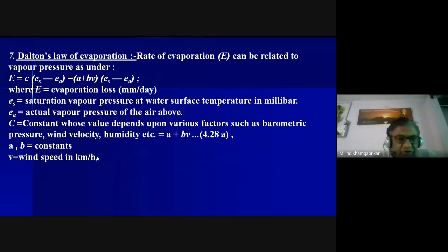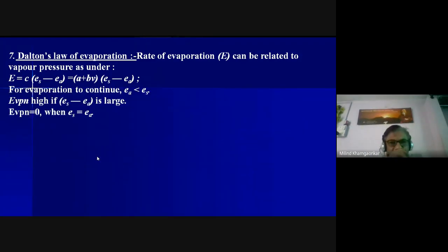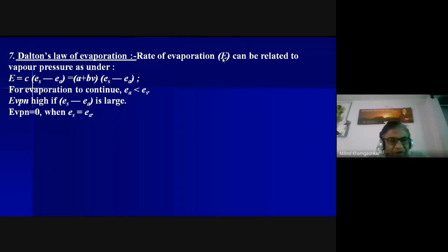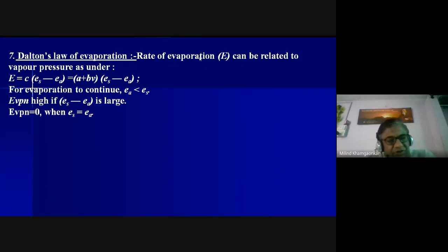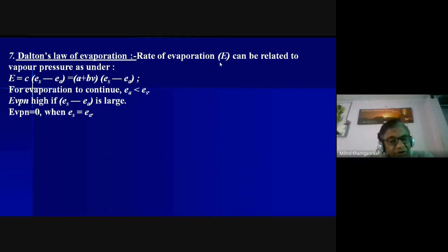This is Dalton's law of evaporation. The rate of evaporation E is expressed in centimeters or millimeters per day, and can be related to rainfall intensity (centimeters per hour, per minute, or per day) and infiltration rate (centimeters or millimeters per day or per hour).